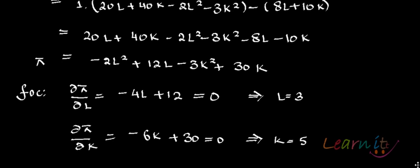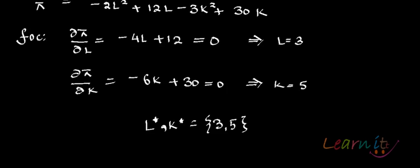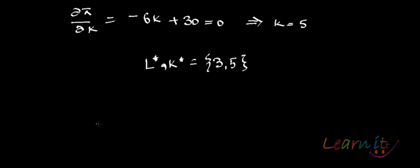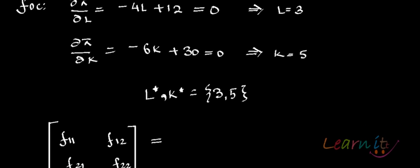Now you need to find out whether this point, L star K star equals 3, 5, actually defines the profit maximizing level of output or not. For this you will check the second order conditions. For second order condition you will calculate the Hessian matrix, which is given by F11, F12, F21, F22.